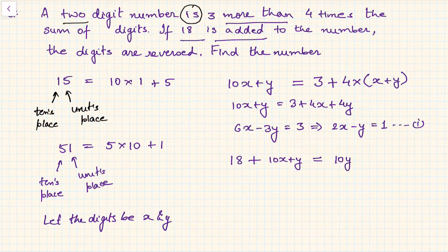So if you reverse the digits, what new number will you get? 10 times y plus x. So here you get the second equation. Simplify again, you will get 9y minus 9x is equal to 18, or y minus x equals 2. This is equation number 2.